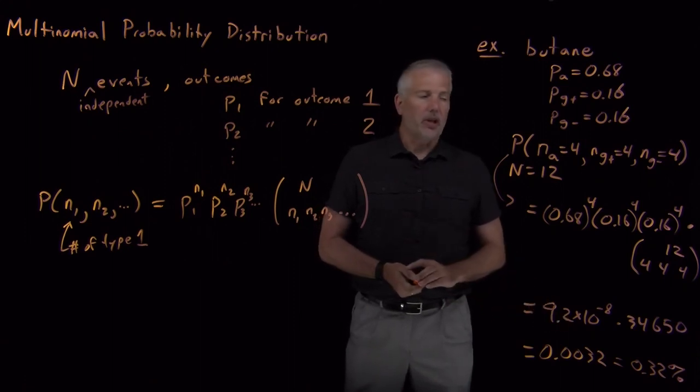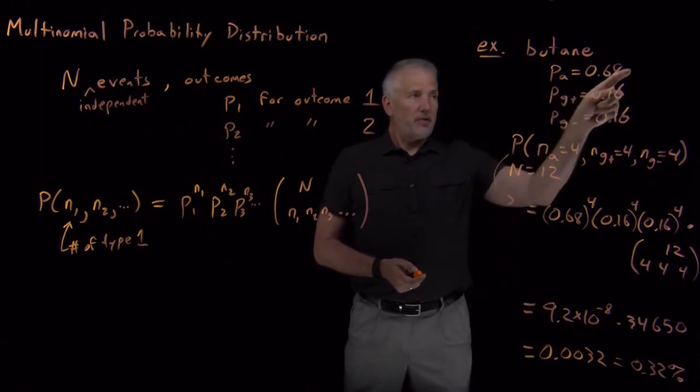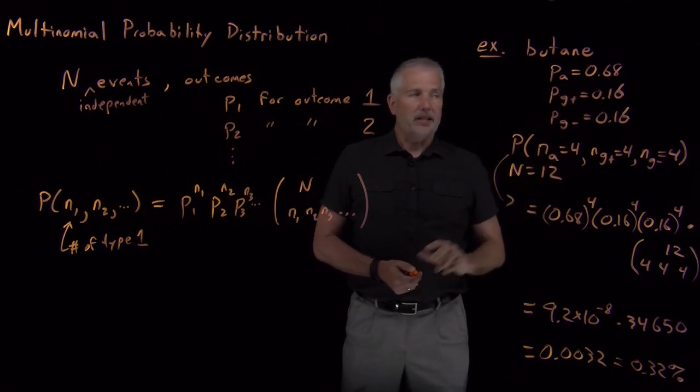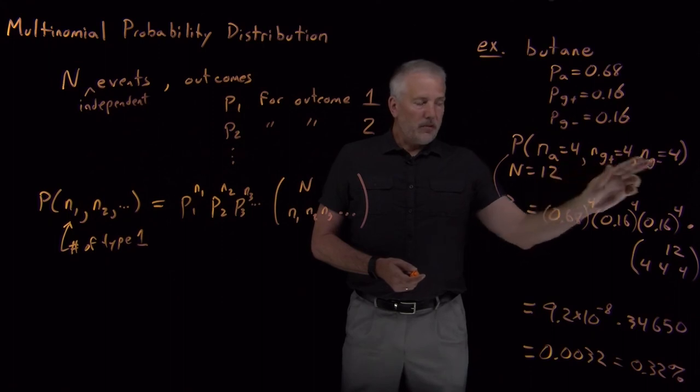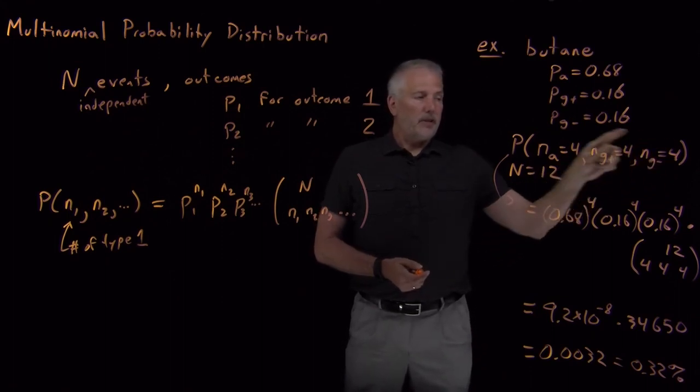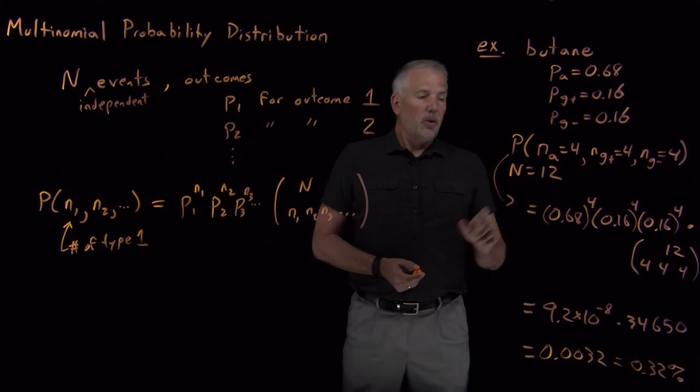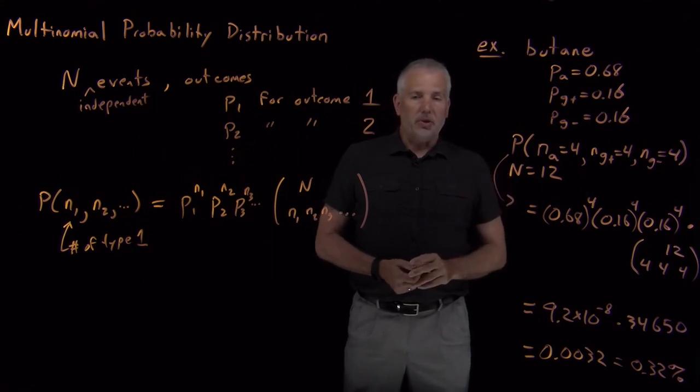There's other possibilities that are slightly more likely, such as, for example, most of the molecules being in the anti-state, because we know that that happens most of the time. But regardless of which individual combination of occupation of these states we're interested in, we can calculate that now with the multinomial coefficient.